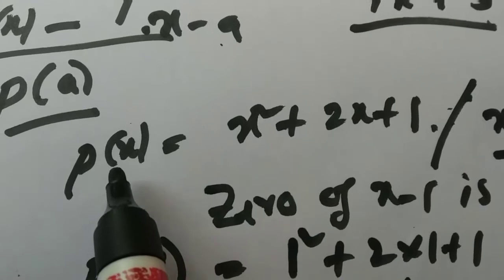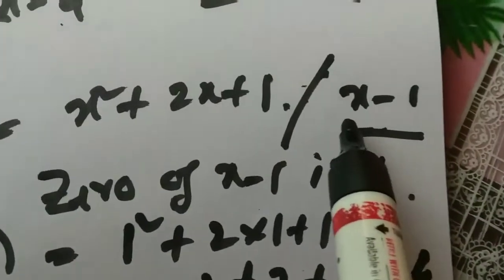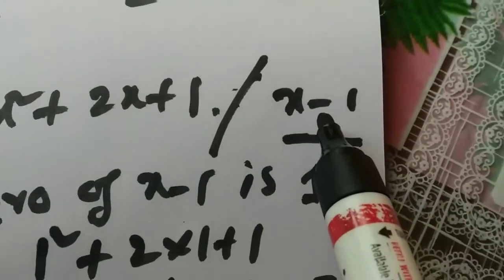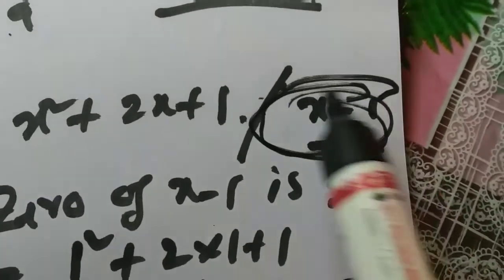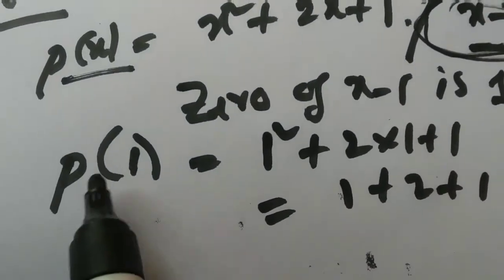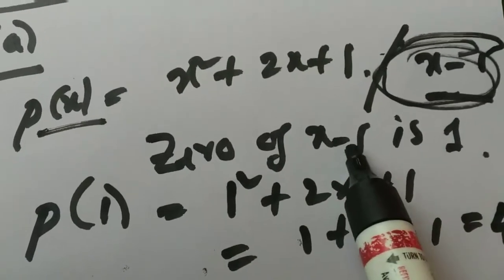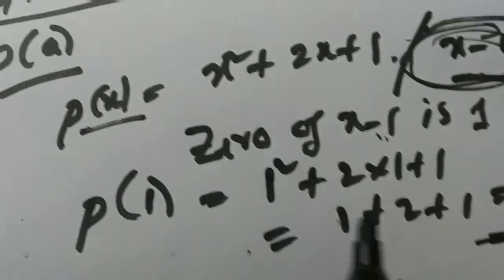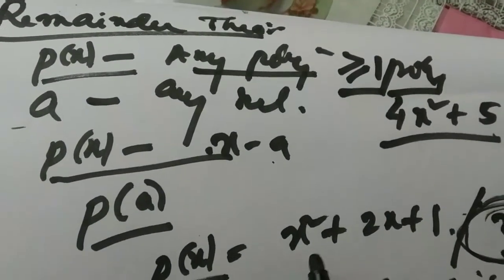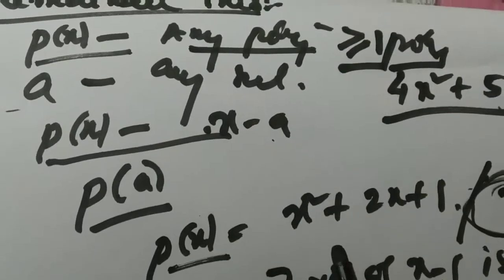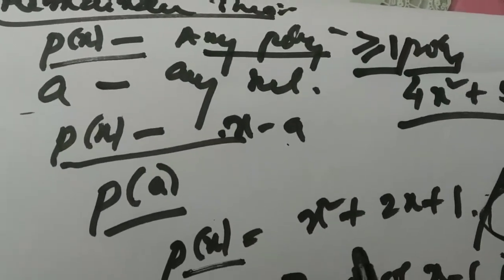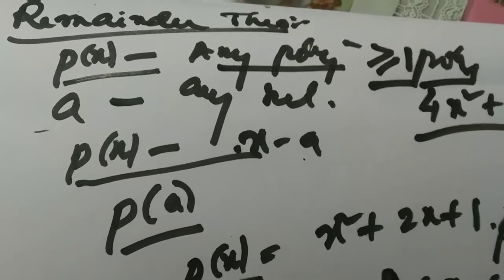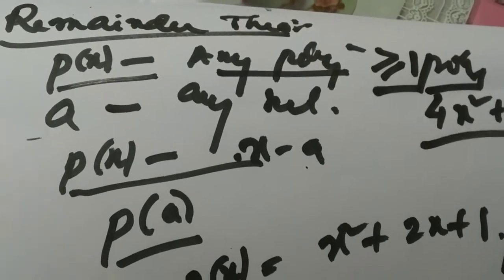We can see that P of X is a polynomial of degree 2 — quadratic — divided by the linear polynomial X minus 1. The remainder is P of 1, since the zero of X minus 1 is 1. So P of 1 gives us the remainder, which is 4. This way we can find the remainder of any polynomial without doing actual division. Thank you everyone for watching; I will update with more lessons.